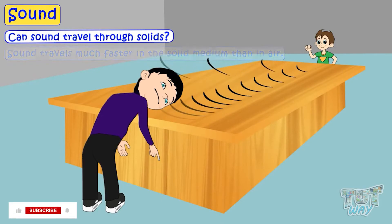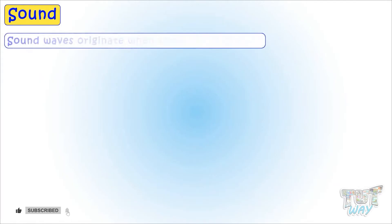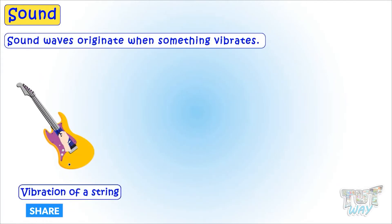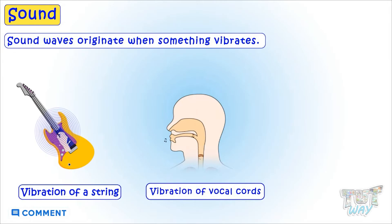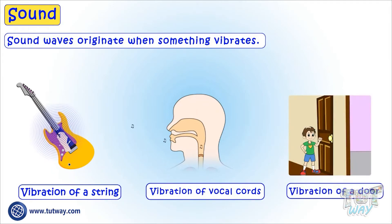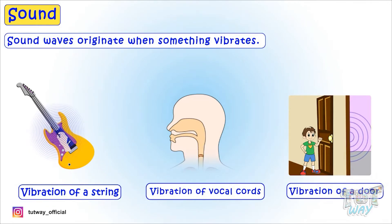Till now we learned that sound waves originate when something vibrates — like the vibration of a string of a guitar when it is plucked, vibration of our vocal cords when we sing or speak, and vibration of a door when someone knocks it. Every sound wave originates when something vibrates.